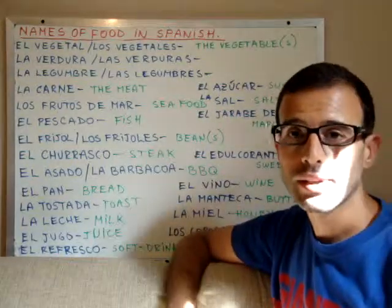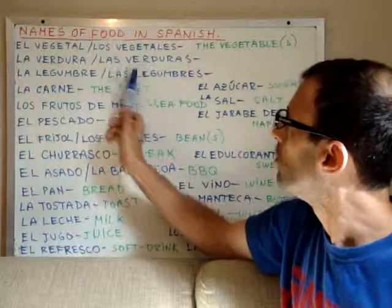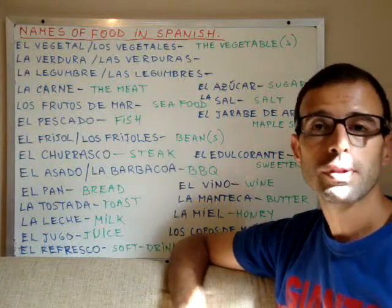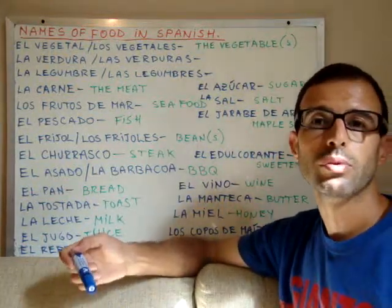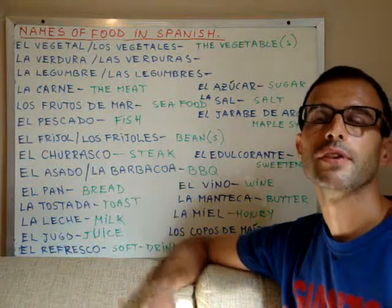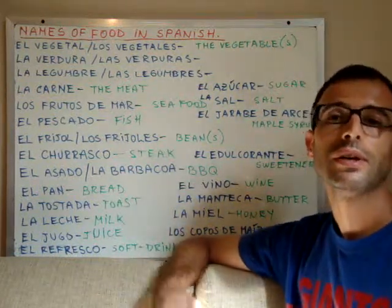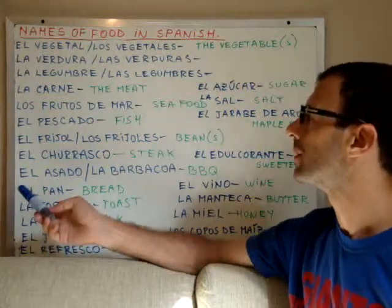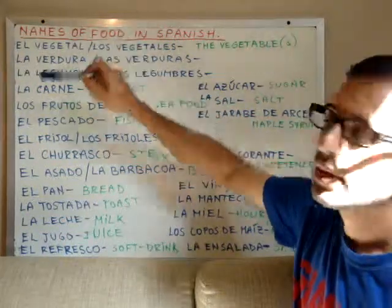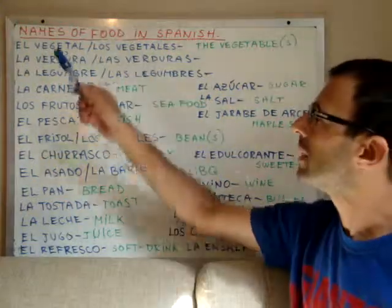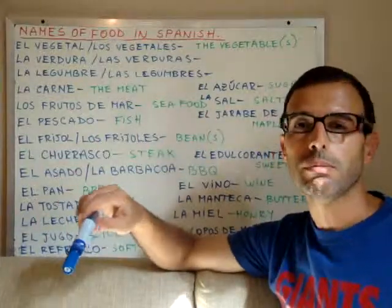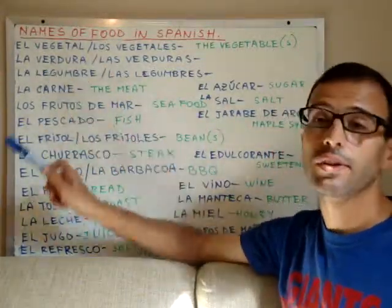Then we have another category, even smaller: legumbres, or la legumbre for the singular. Legumbres are also vegetables, but these are the vegetables usually grown in vegetable gardens — like spinach, lettuce, cauliflower, cabbage, and those. So you can see that these three words all translate as vegetables in English, but they have different meanings. The first one is the broadest, then the second, and then the third.